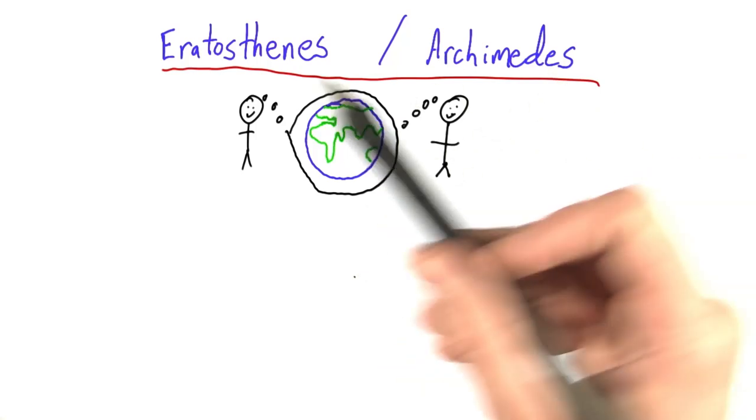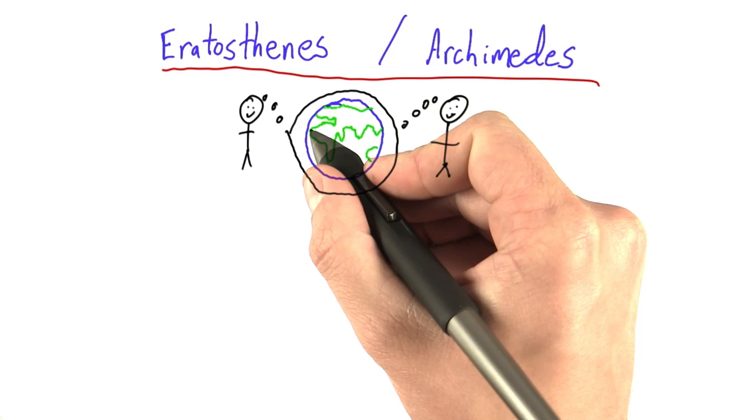So, even though Eratosthenes and Archimedes were both spending a lot of time thinking about the earth and, in fact, the earth's circumference, Eratosthenes, it seems, had an advantage.